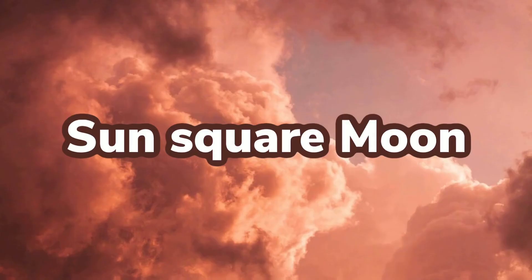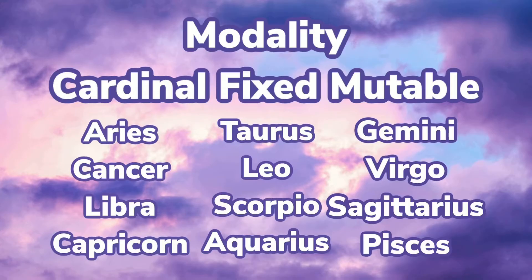The next aspect is kind of the opposite of the two I just talked about. We have sun square moon, or the sun in square with the moon. This happens when the sun and the moon are in signs of the same mode or modality — meaning both cardinal, both fixed, or both mutable. So if someone's sun is in Gemini, which is mutable, their moon could be in Virgo, which is also mutable.